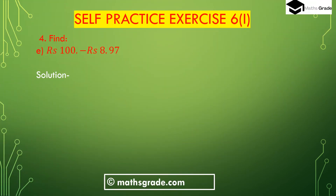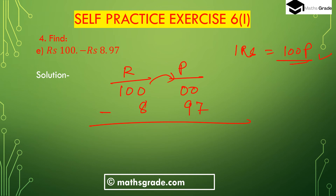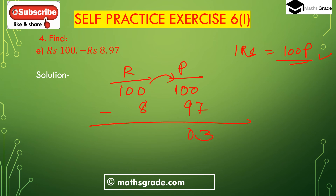Now question part (e): 100 rupees minus 8 rupees 97 paise. This is the rupees column and this is the paise column. 100 rupees has 00 paise — there is no paise — and we subtract 8 rupees 97 paise. We cannot subtract 97 from 00, so we take 1 rupee from the rupees column. 1 rupee is 100 paise, so 00 becomes 100. 100 minus 97 is 3 paise.